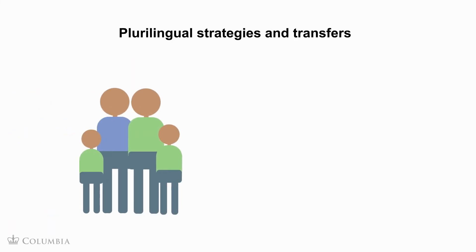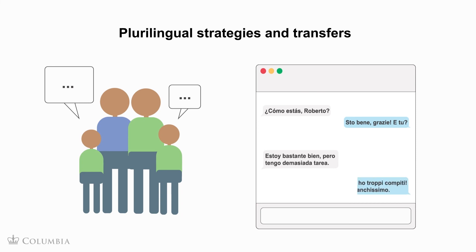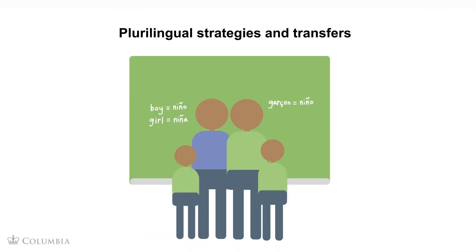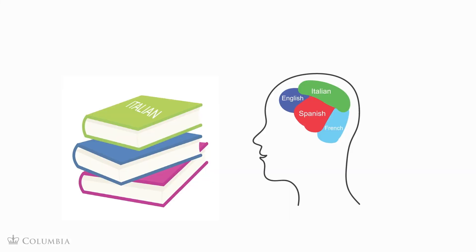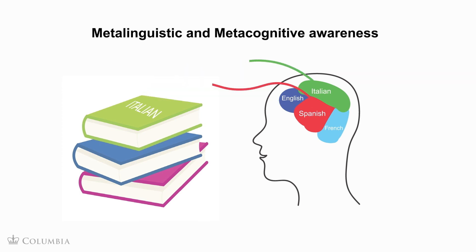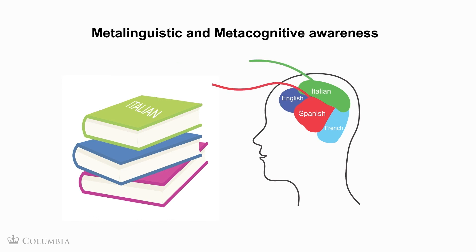Plurilingual speakers might use these strategies and linguistic transfers in their daily life while listening to a heritage language within their family, like an Italian dialect, or making sense of texts from friends who speak another language, or reading a sign or a menu in a foreign country, or learning a new language. However, plurilingual approaches help learners to develop metalinguistic awareness and metacognitive awareness of their learning strategies in order to make more effective use of knowledge transfers while learning additional languages.